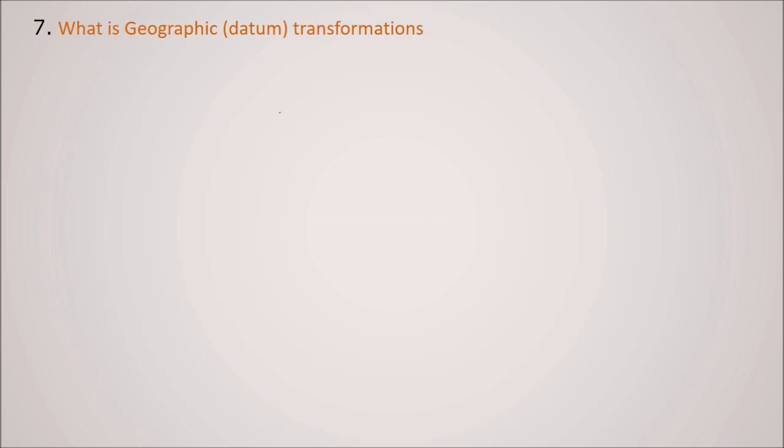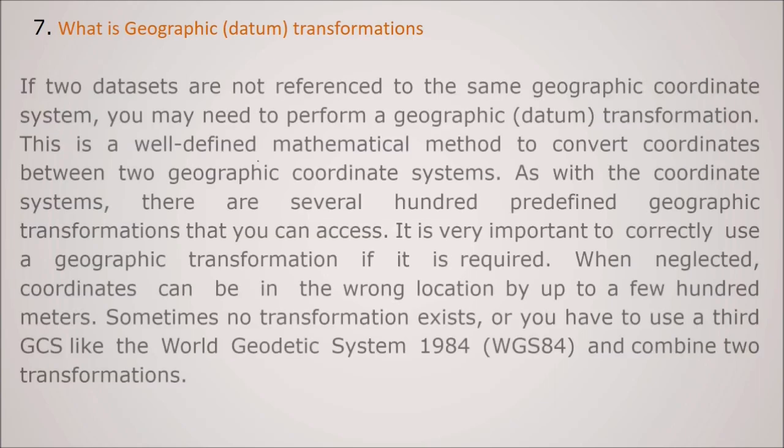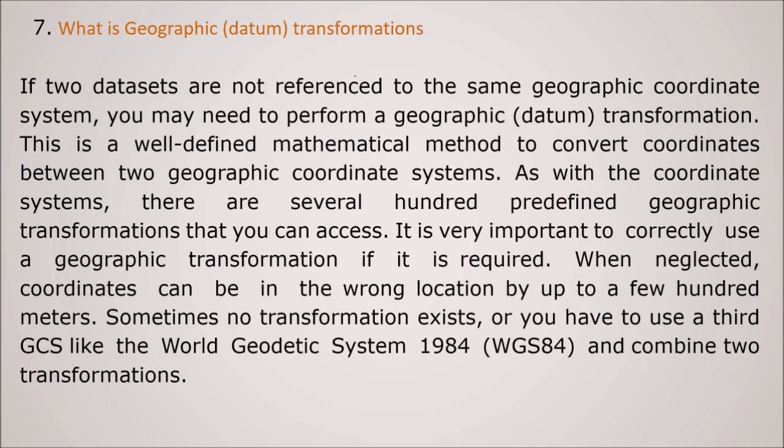What is datum or geographic transformation, data transformation? If two data sets are not referenced to the same geographic coordinate system, you may need to perform certain data transformation or geographic transformation. So this is a well-defined mathematical model to convert coordinates between two GCS. As with the coordinate system, there are several hundred predefined geographic coordinates that you can access. So it is very important to correctly use this geographic transformation if it is required. And if you neglect, coordinates can be in the wrong location by up to a few hundred meters. Sometimes no transformation exists. So you have to use a third GCS like WGS84 - World Geographic System 1984 - and combine two transformations.